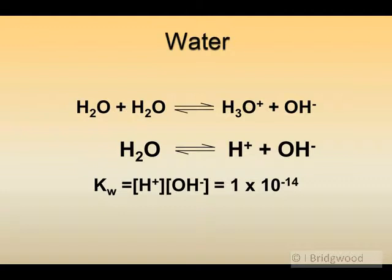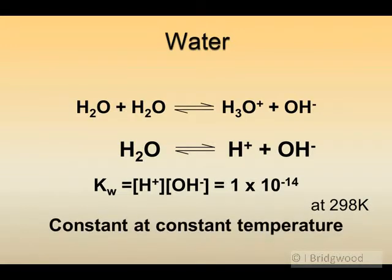We get a KW expression where KW equals the product of the concentrations of hydrogen ions and hydroxide ions, equal to 1 times 10 to the minus 14 at 298 Kelvin. This is sometimes known as the ionic product of water or the dissociation constant for water. It's constant at constant temperature, but if you change the temperature, the value of KW will increase or decrease. Have a think about how it might change with changing temperature.